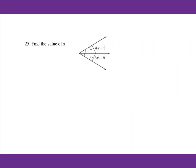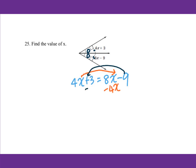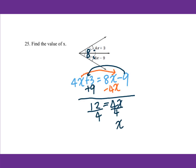For number 25, find the value of X. Since these two triangles are congruent, the corresponding parts of congruent triangles are congruent. Which means 4X plus 3 equals 8X minus 9. Subtract 4X from both sides, then add 9 to both sides. You get 4X equals 12. Divide by 4: X equals 3.